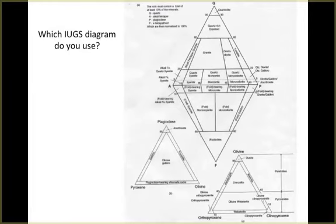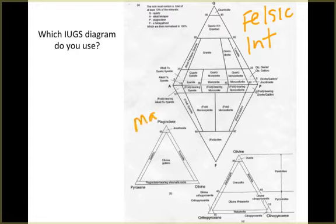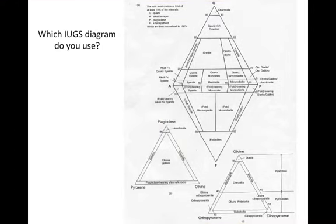To name the rock, we'll need to decide which IUGS diagram to use. I showed you three different IUGS diagrams to name plutonic rocks: the QAP diagram for felsic and intermediate rocks, another diagram for more gabbroic or mafic rocks that has the key components of plagioclase, pyroxene, and olivine, and a diagram for ultramafic rocks that has olivine, orthopyroxene, and clinopyroxene as key components.